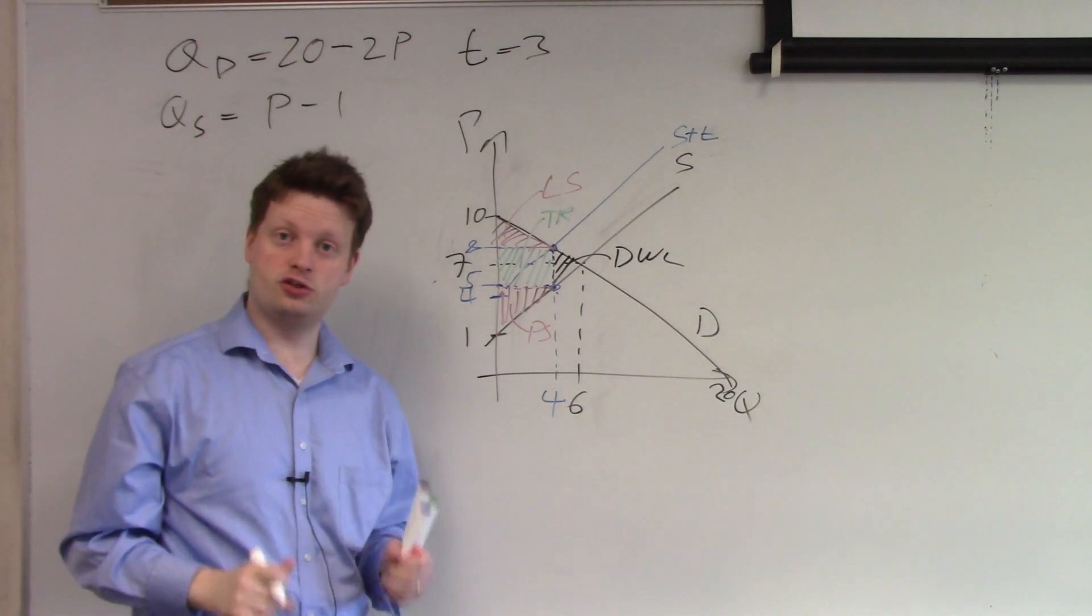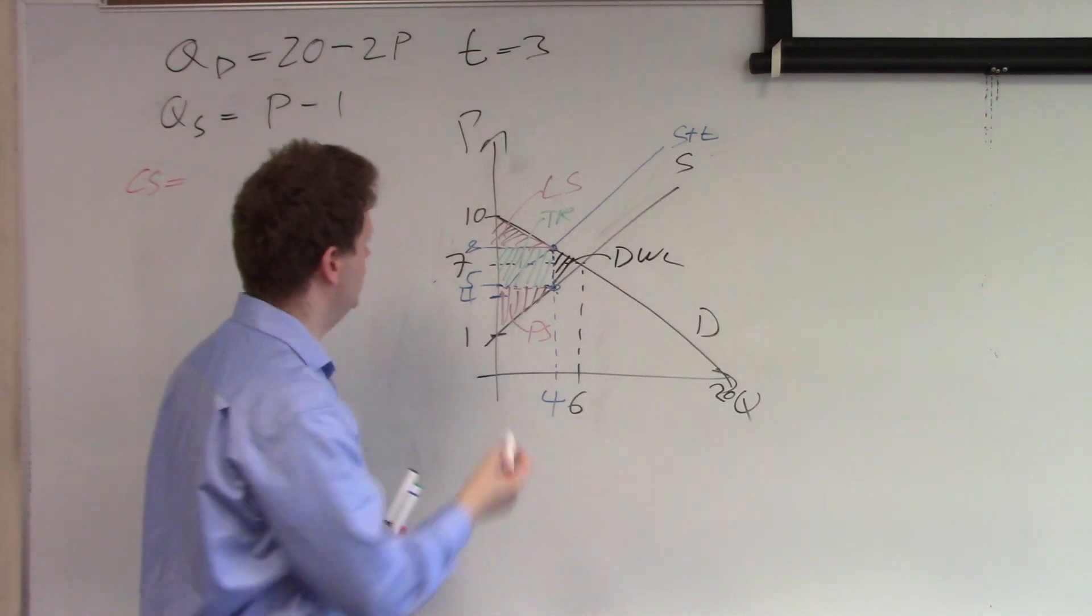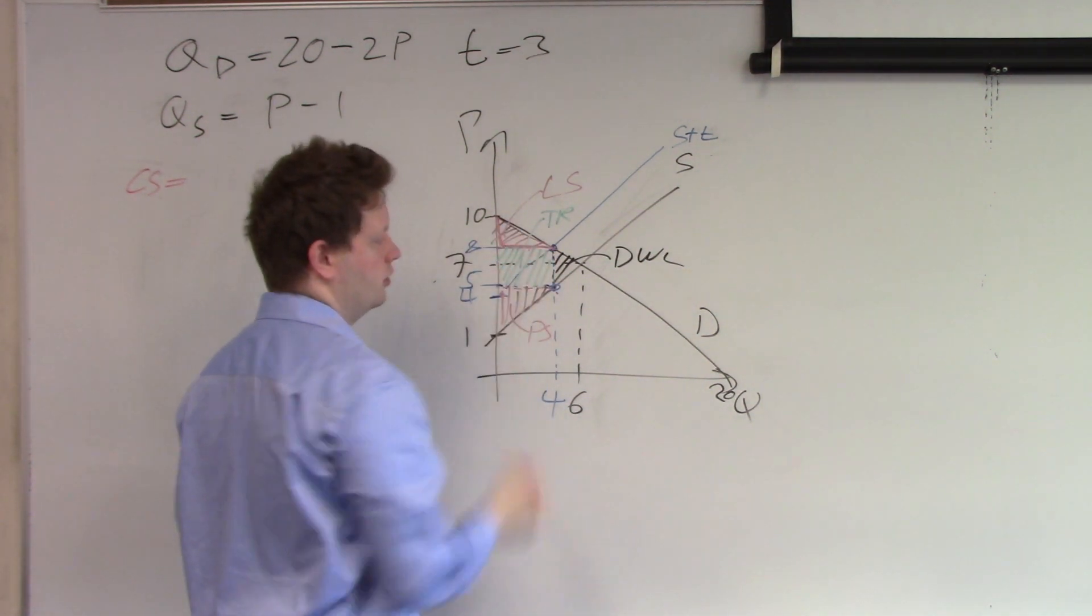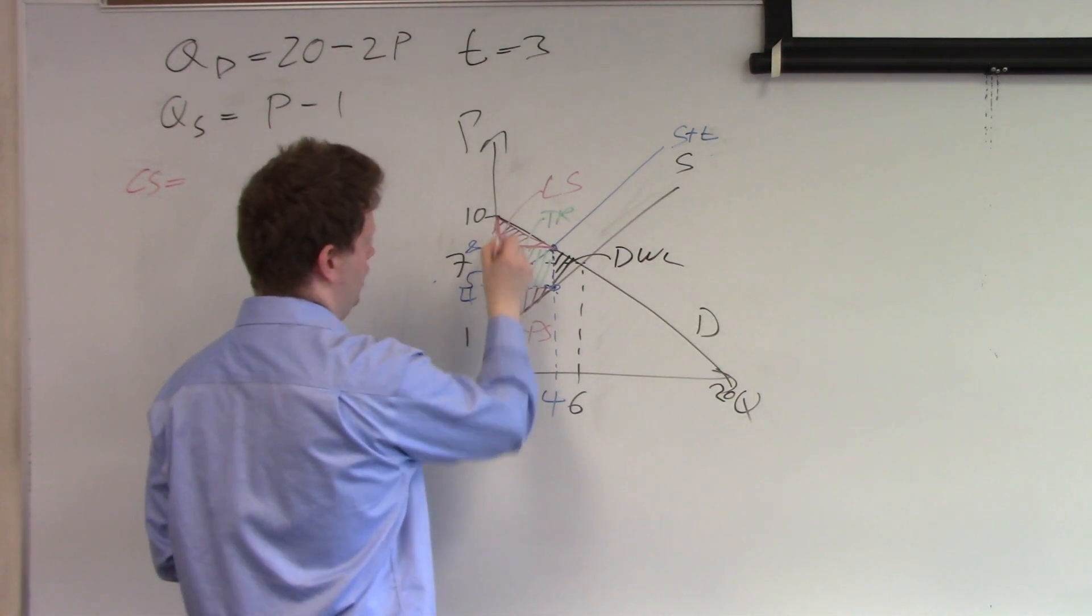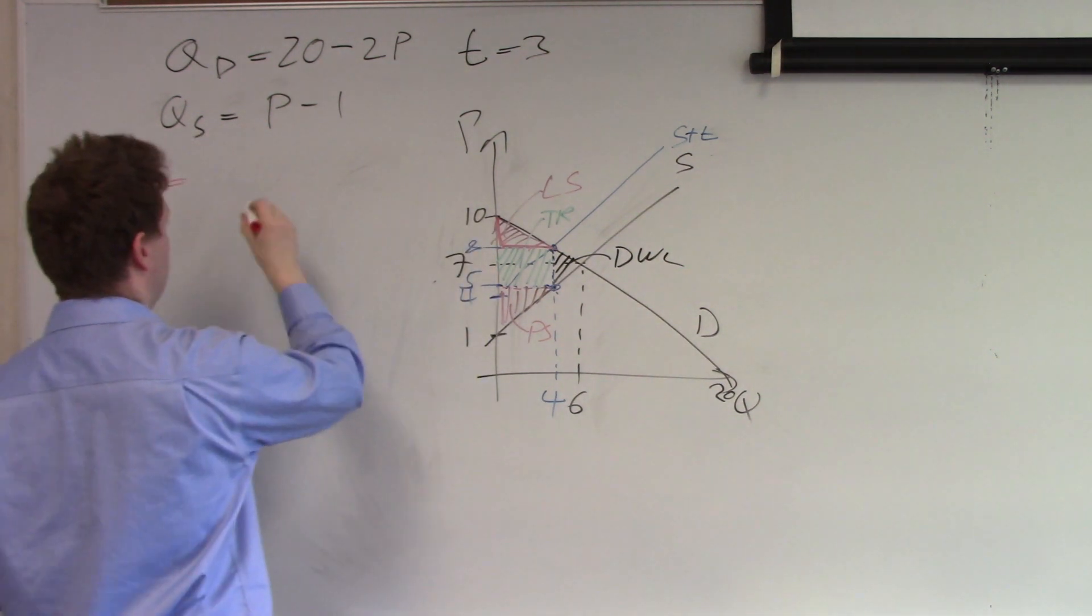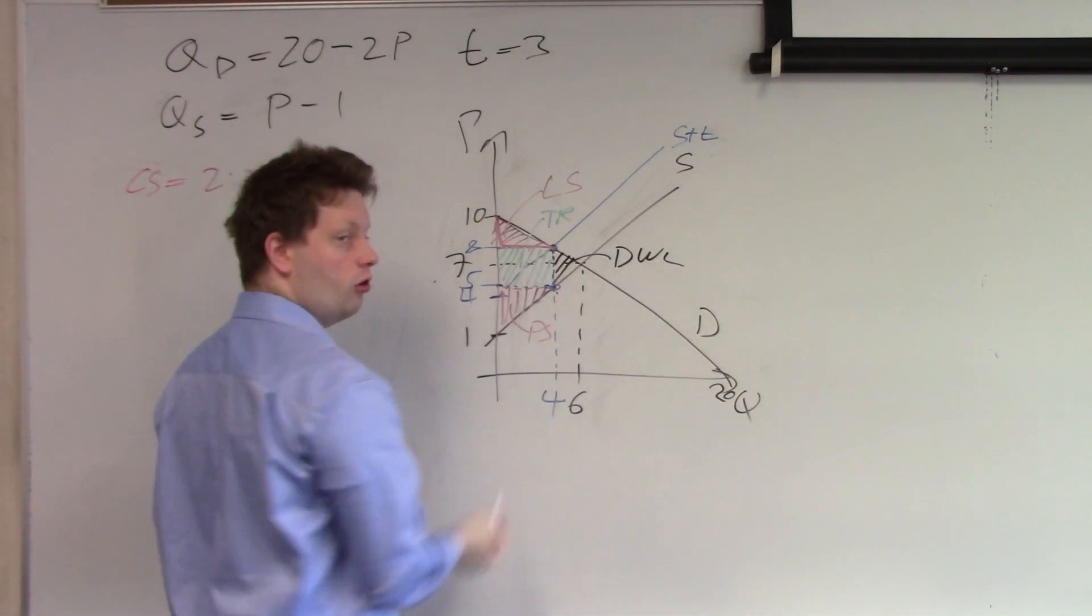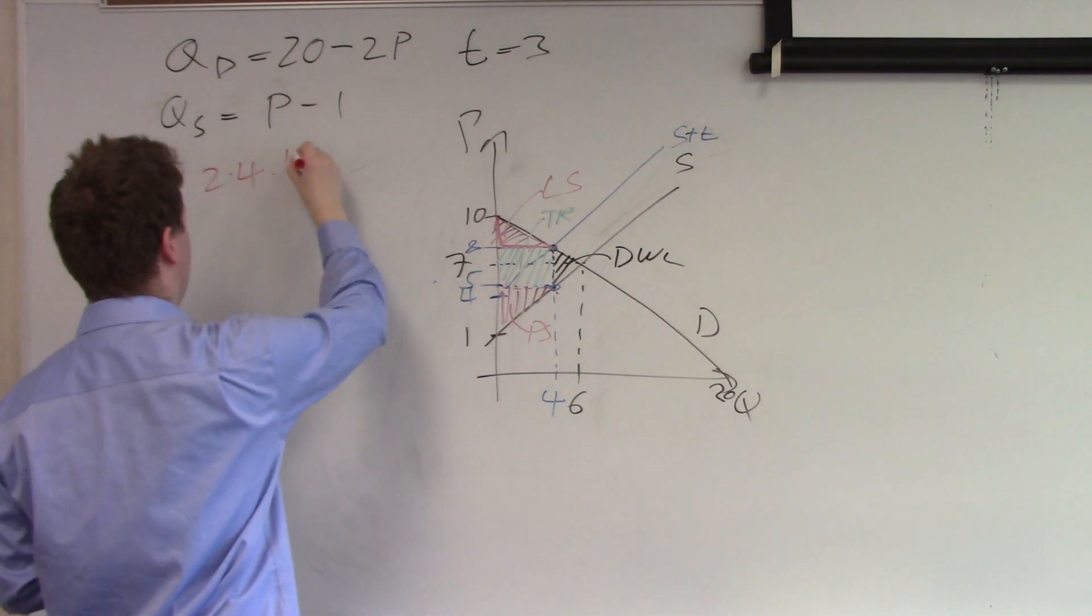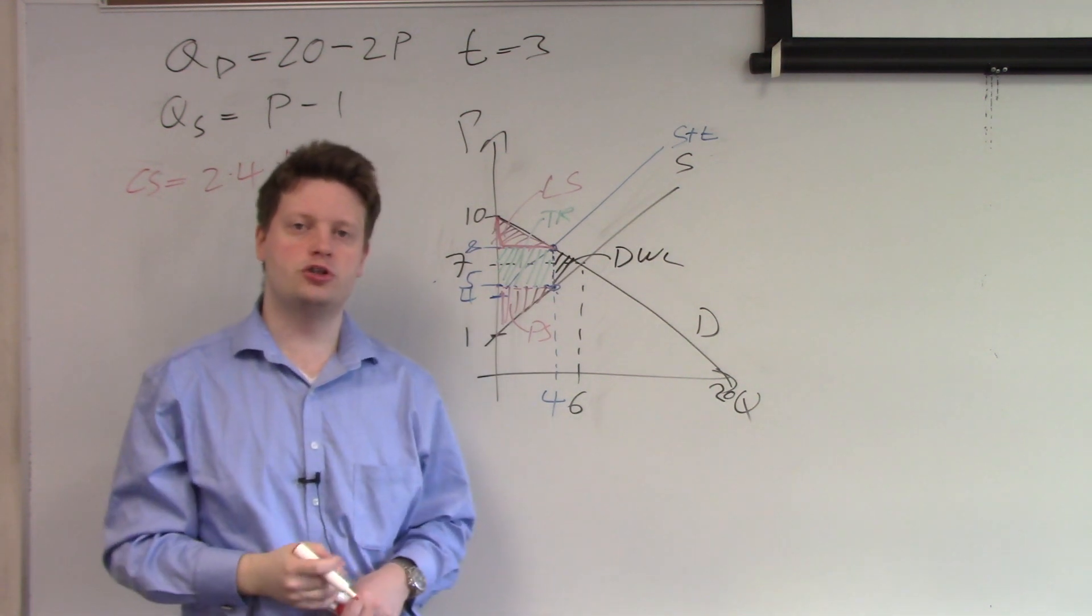Let's start with consumer surplus. If we look at this triangle, we know it's this distance times this distance over 2 because of the triangle formula. So this distance here is from 8 to 10, that's 2. And this is from 0 to 4. So that's 4 times 1 half because of the triangle equals 4. So we get a consumer surplus of 4.